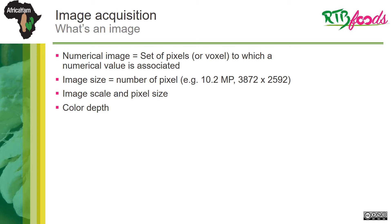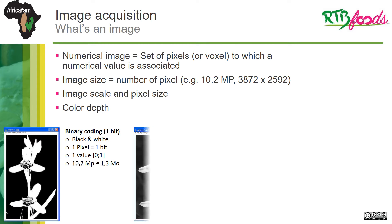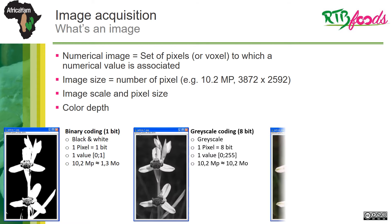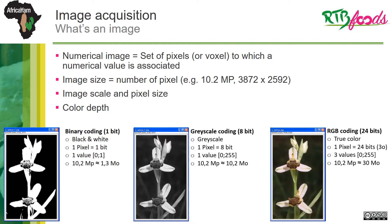One last property of the image is the coding of its color. This can, for example, be coded in black and white, greyscale, or true color. Each time, the amount of information carried by the pixel will be different and therefore the storage space needed for the image too.